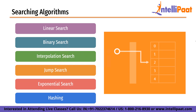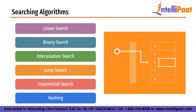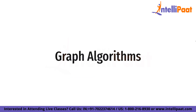Hashing is a technique used to map a large set of inputs to a smaller set of outputs. In the context of searching, hashing maps the target value to a specific index in a hash table and checks if the value at that index matches the target. Hashing has a time complexity of O(1) on average, but can have a worst case time complexity of O(n).